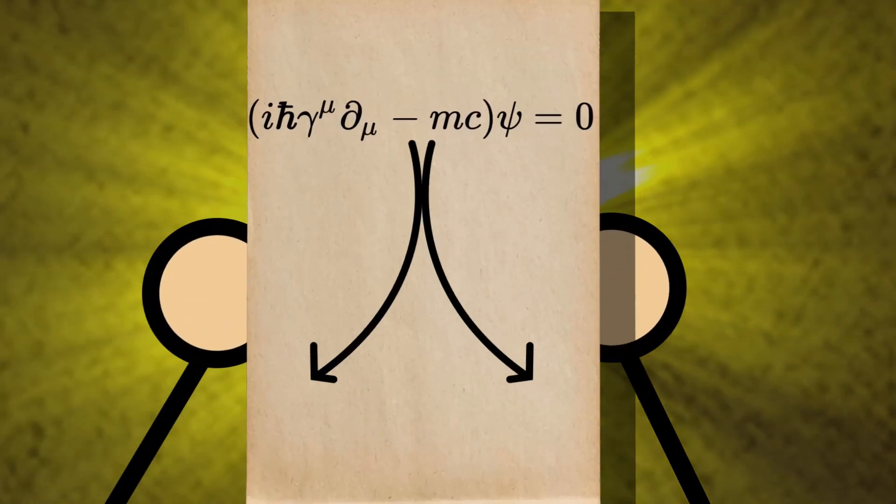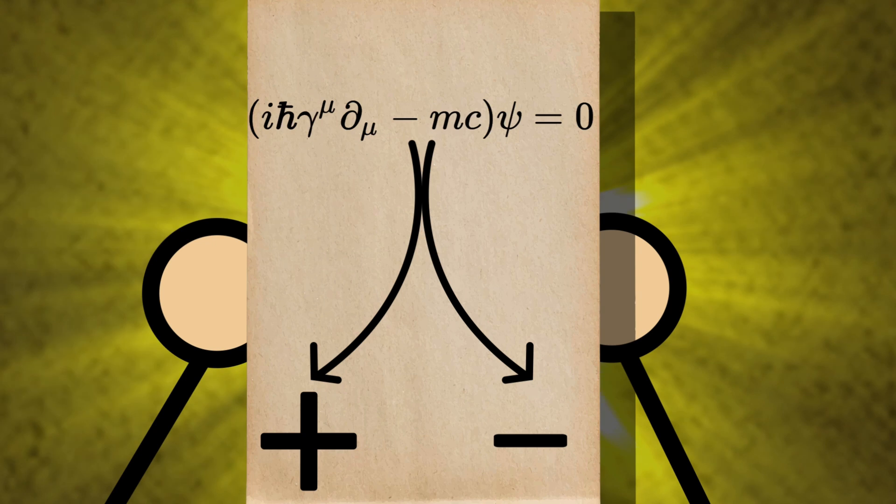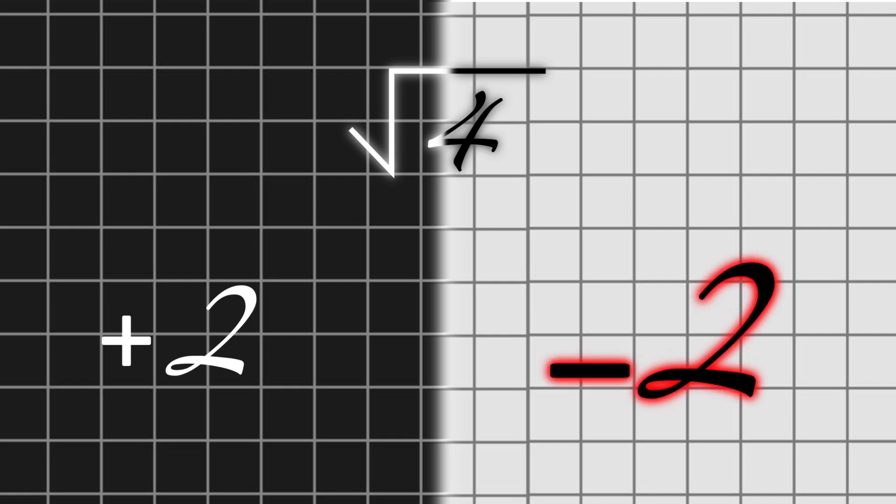But every time he did the calculation, he got two answers, one positive and one negative. Think about it like the square root of 4. The answer is plus 2 and minus 2.